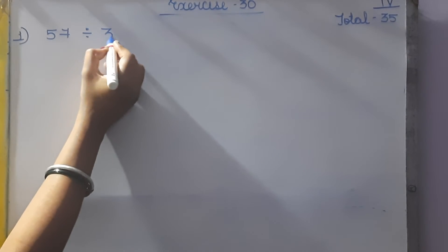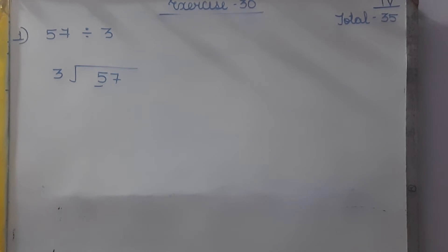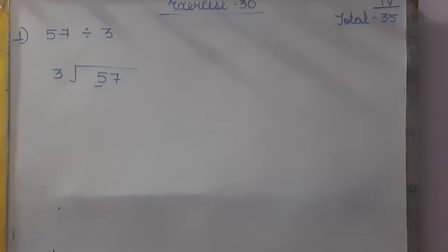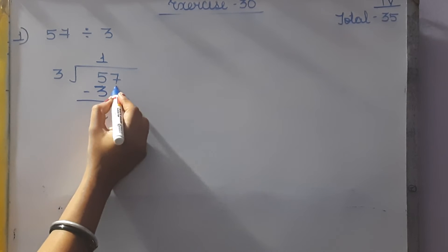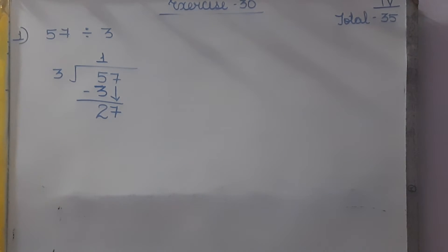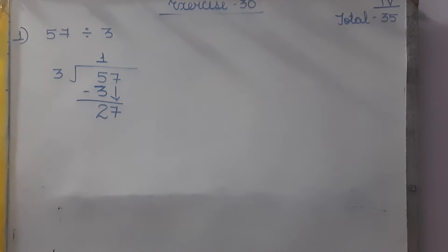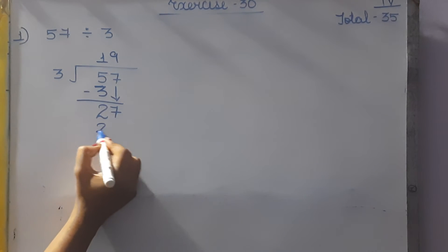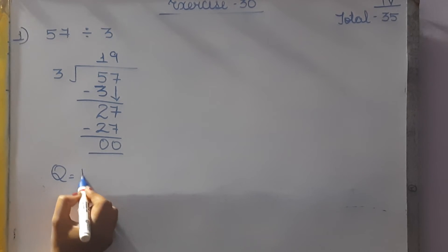57 divided by 3. In the table of 3, does 5 come? No. So we take the smaller number: 3 ones are 3. So 5 minus 3 is 2. Bring down 7. In the table of 3, how many times does 27 come? 3 nines are 27. When we subtract, we get 0. So the quotient is 19.